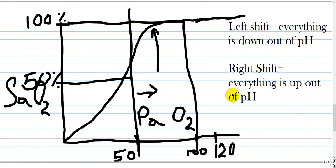It is important to know the oxygen dissociation curve. If this one is going to the right, it means that everything is up out of pH. I made this mnemonic to be easy. What do I mean everything is up? Temperature is going up.